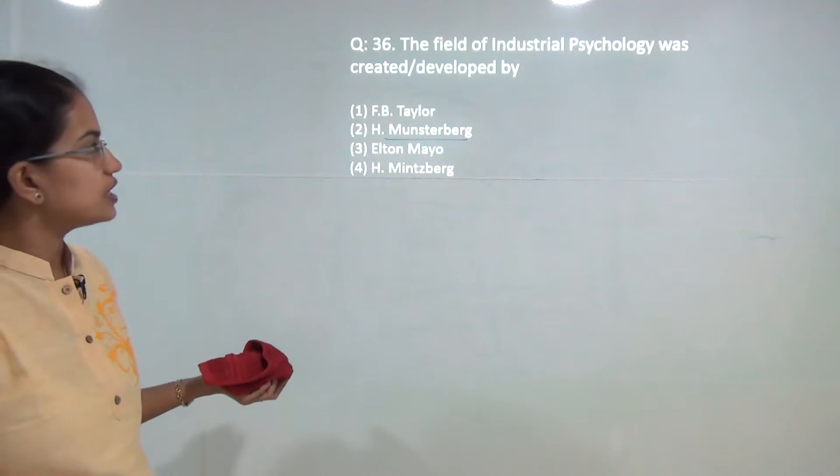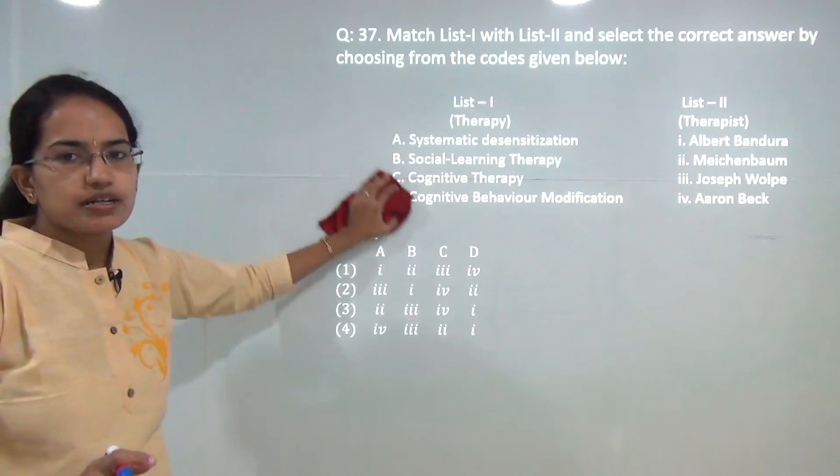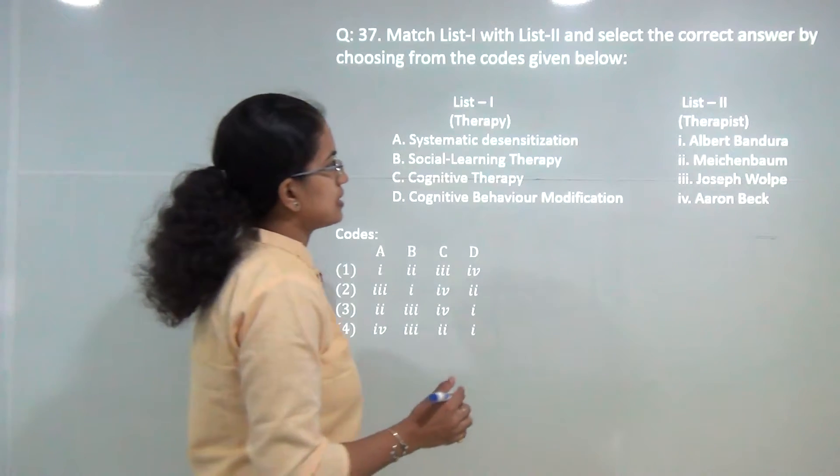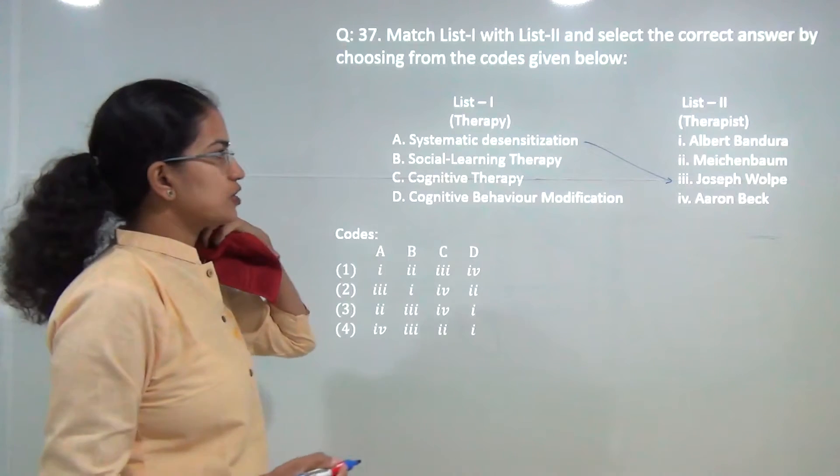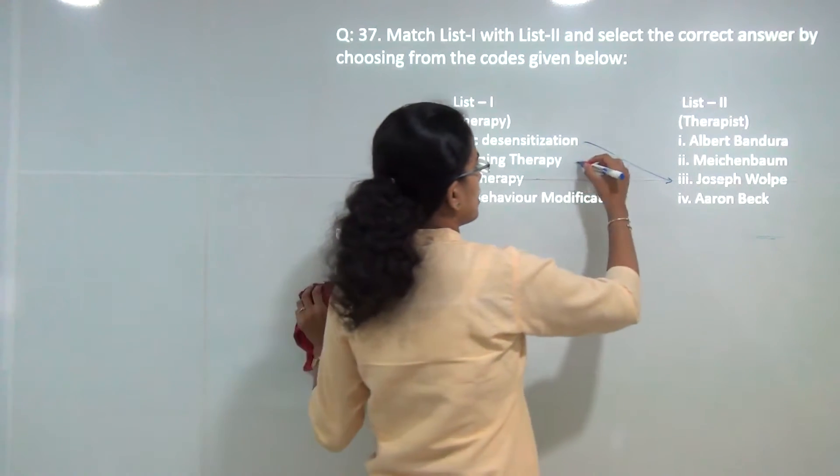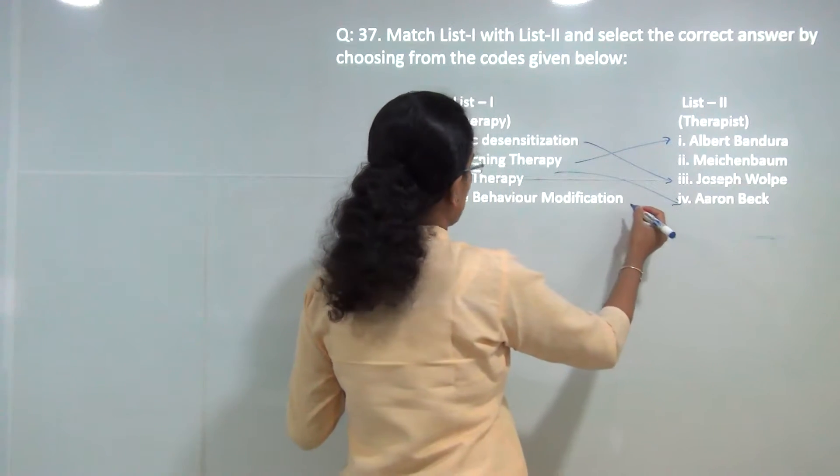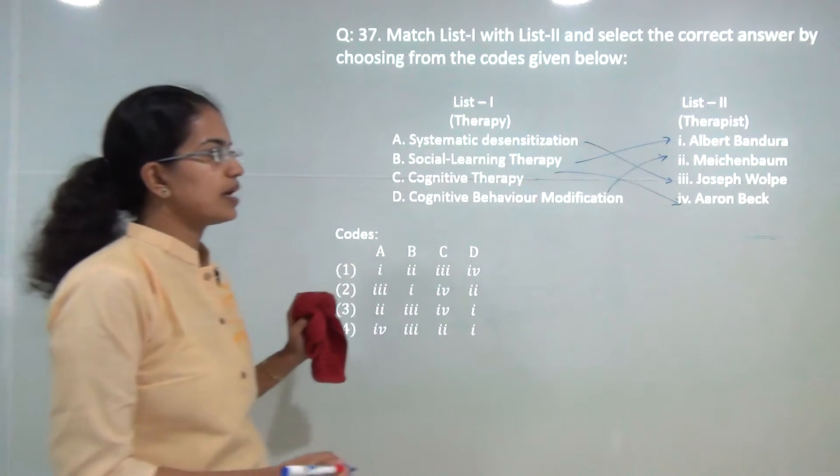You have to match the therapies with the correct person or the therapist. Systematic desensitization was propounded by Wolpe. Social learning was given by Bandura. Cognitive theory was propounded by Beck. And finally, cognitive behavior modification therapy was given by Meichenbaum.